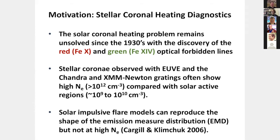The density is higher by a factor of a hundred or more, which means the magnetic fields are pretty high — maybe 500 gauss — and it begs the question whether these really look like solar coronae. There are two models: solar impulsive flare models can reproduce the emission measure distribution shape, but so far they have not been able to produce such a shape at high electron density.